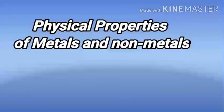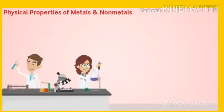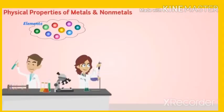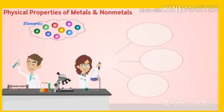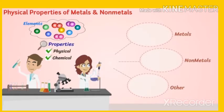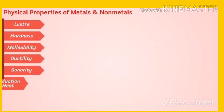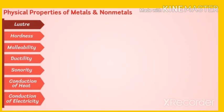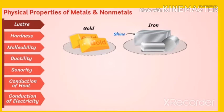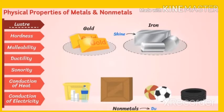Physical properties of metals and non-metals. When scientists were discovering elements, they felt the need to group them by studying their physical and chemical properties. Let us understand some physical properties of metals and non-metals. Lustre: All metals in the pure state have a shining surface. This property is called metallic lustre. Non-metals, on the other hand, are dull and therefore do not have lustre.